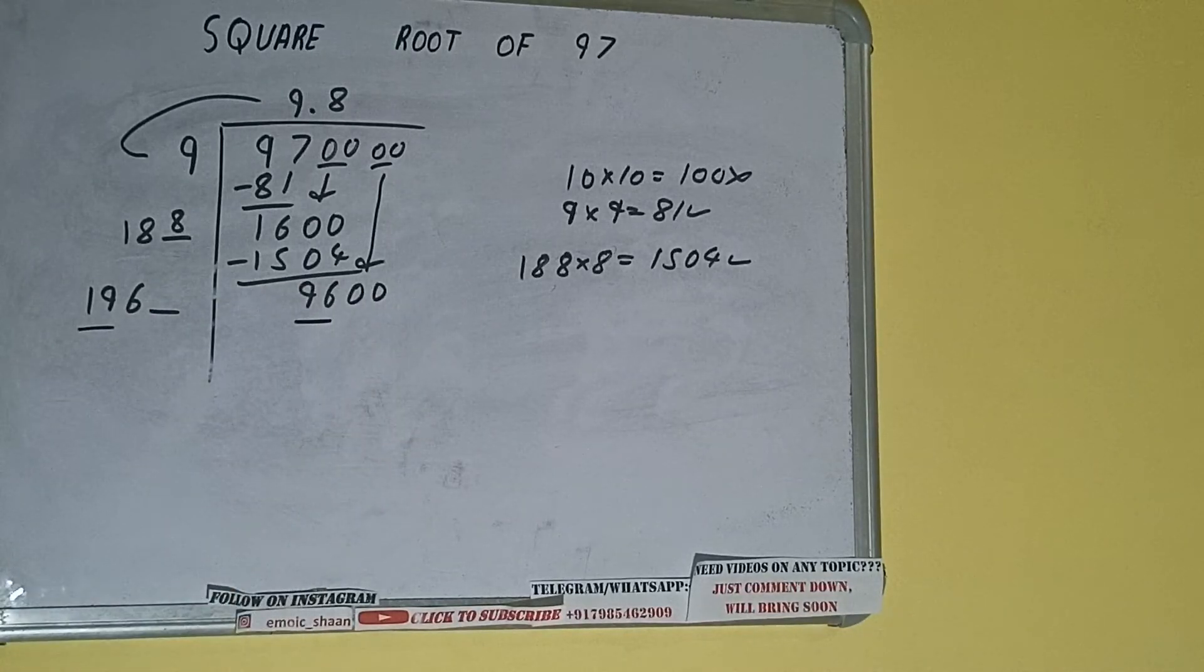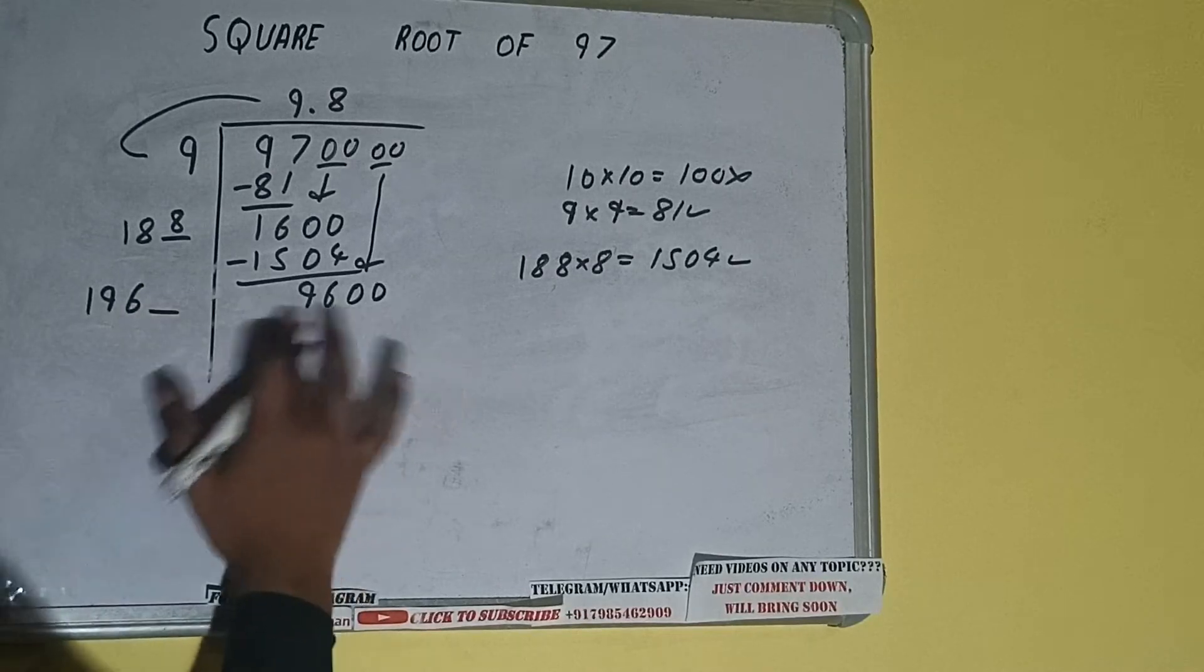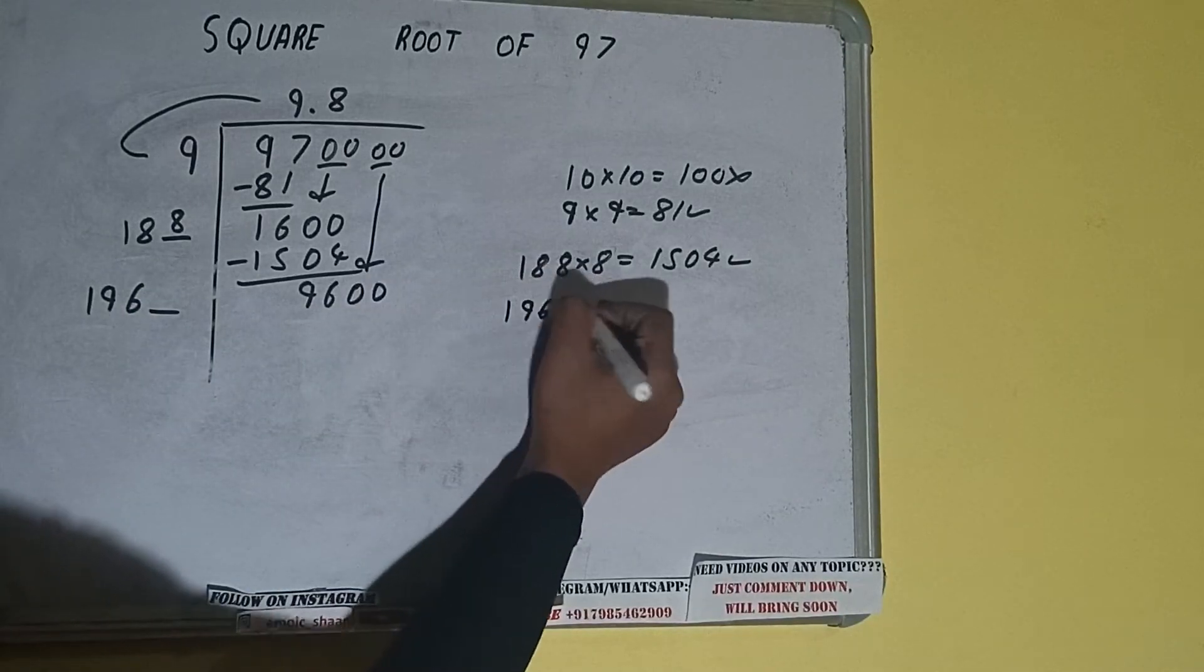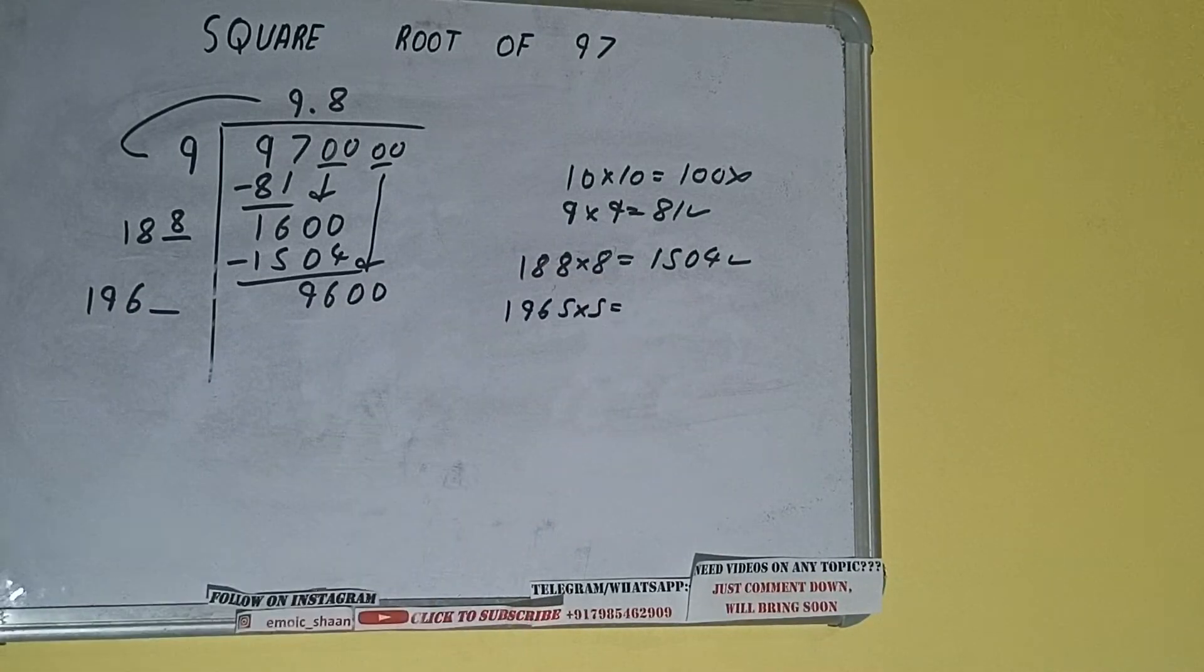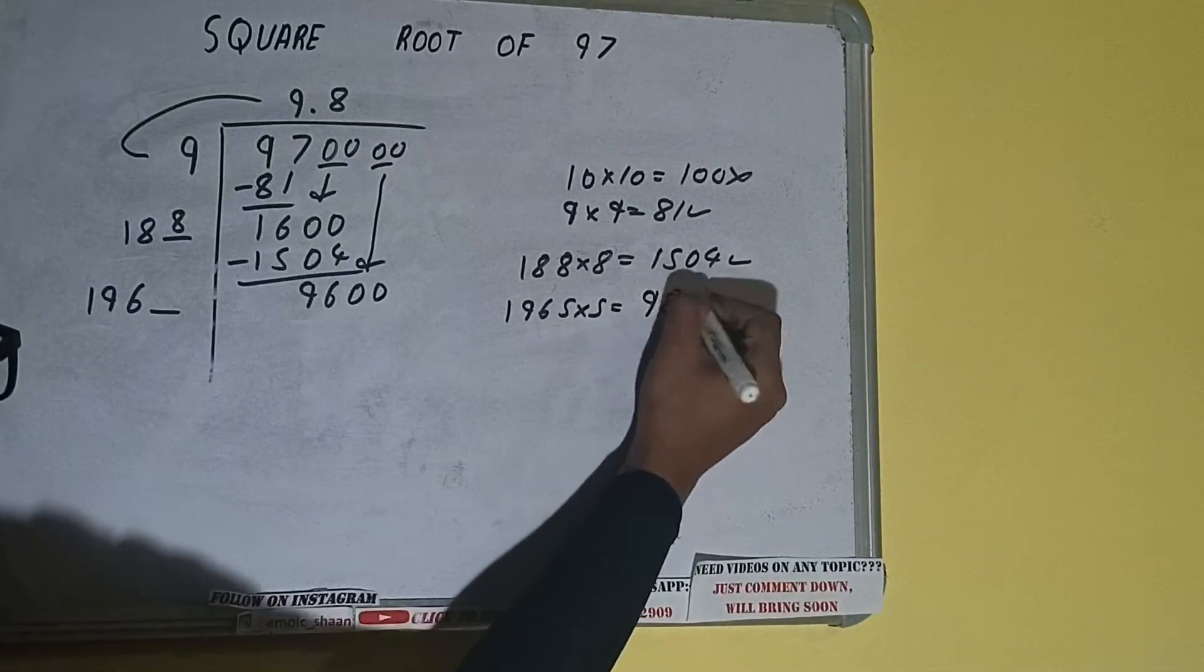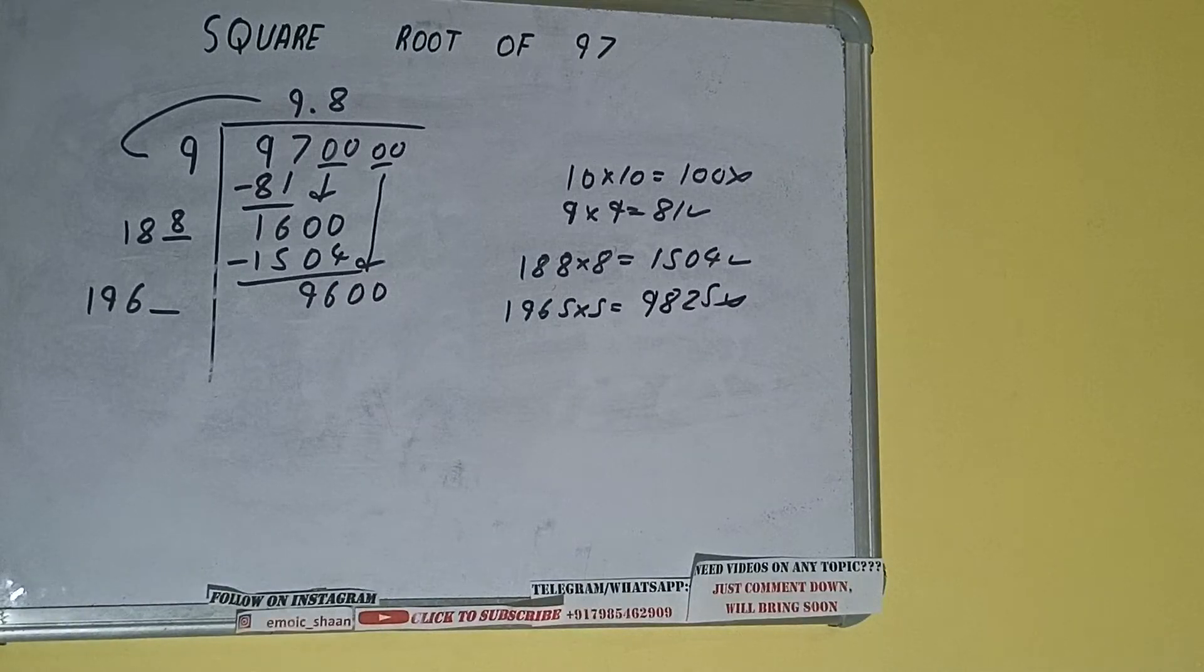Now compare this 19 with this 96. So 19 five times is 95, so we can try 5 times. 1965 into 5 we can try, and we'll be getting 9825, which is bigger than this number, so we cannot take 5 times.